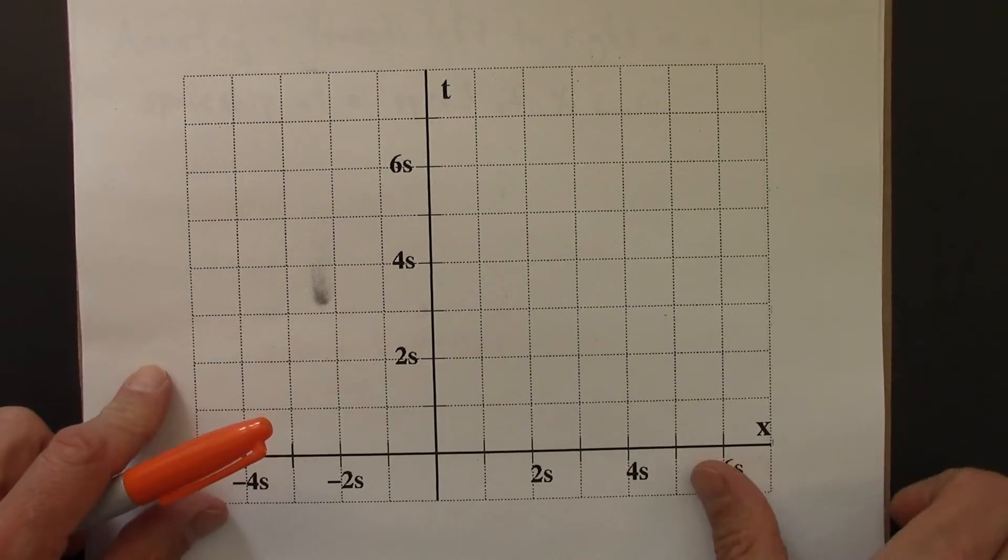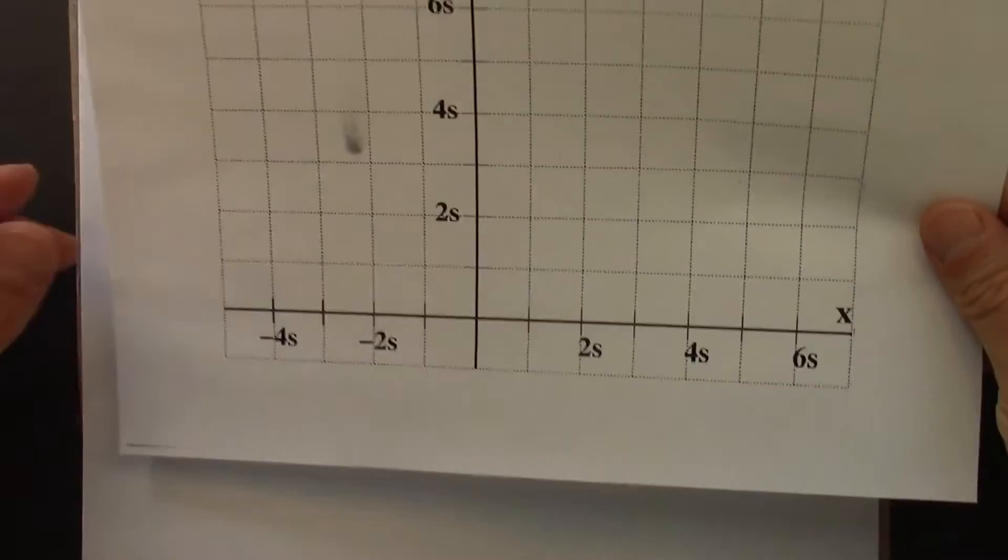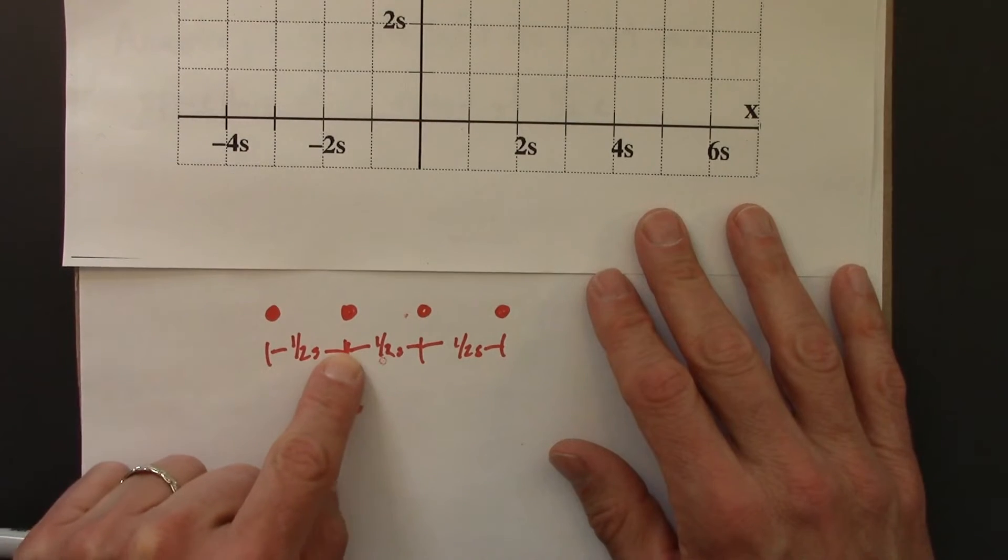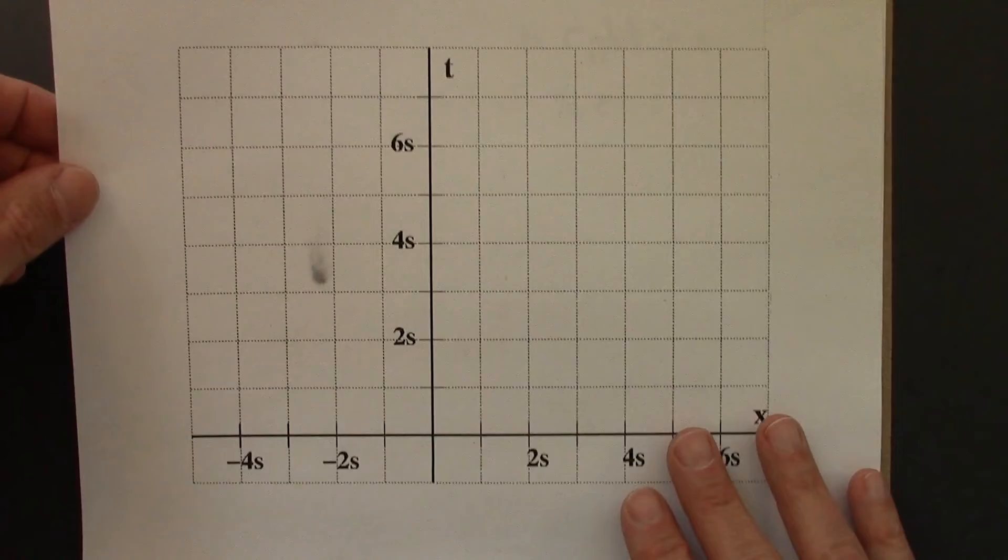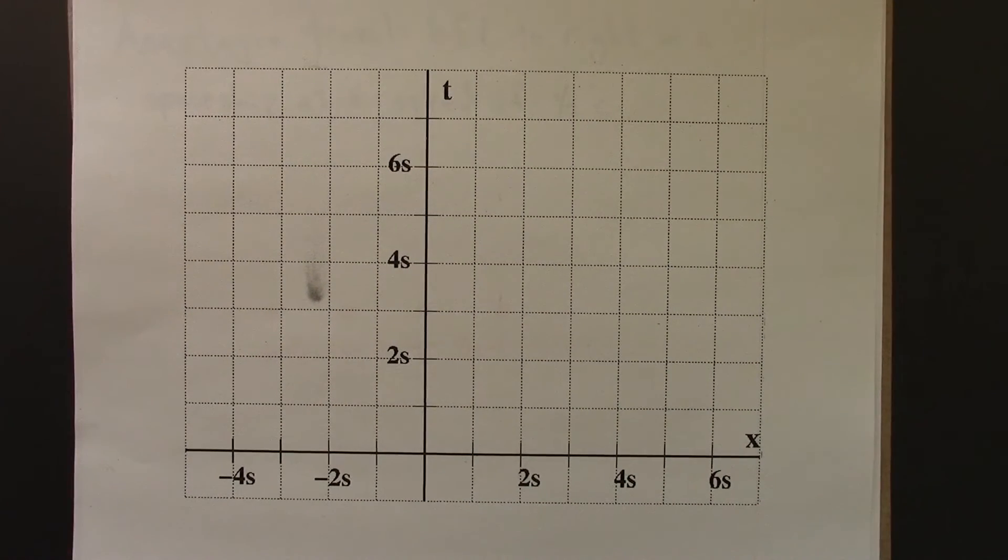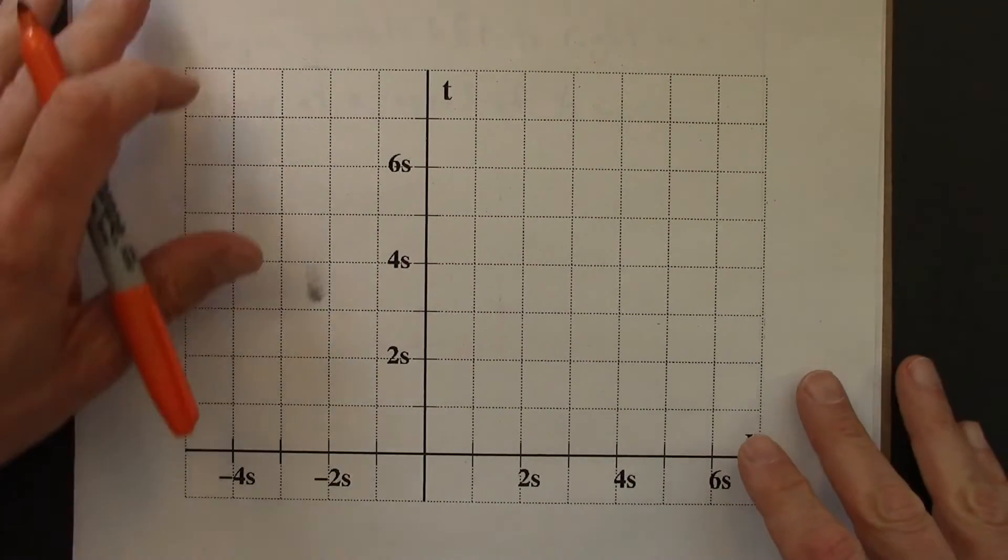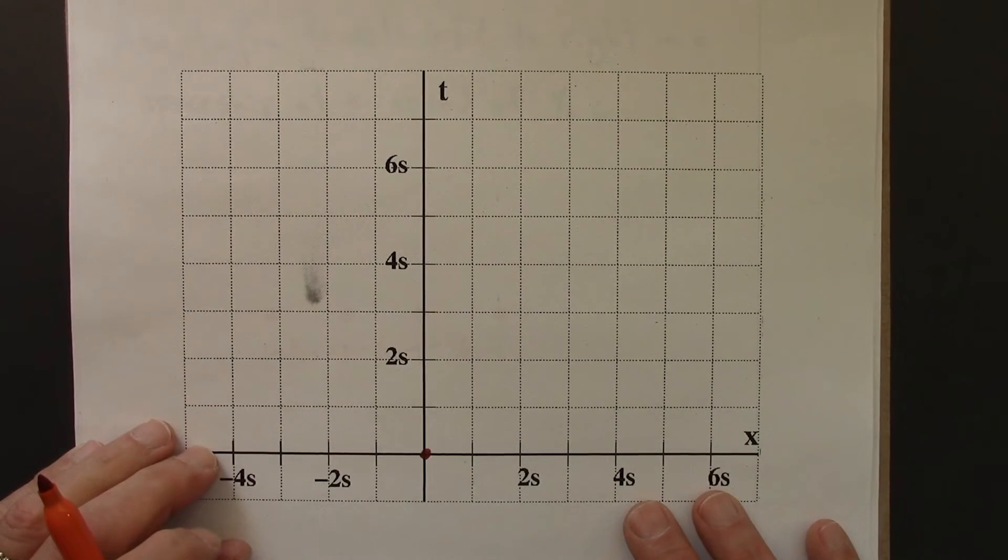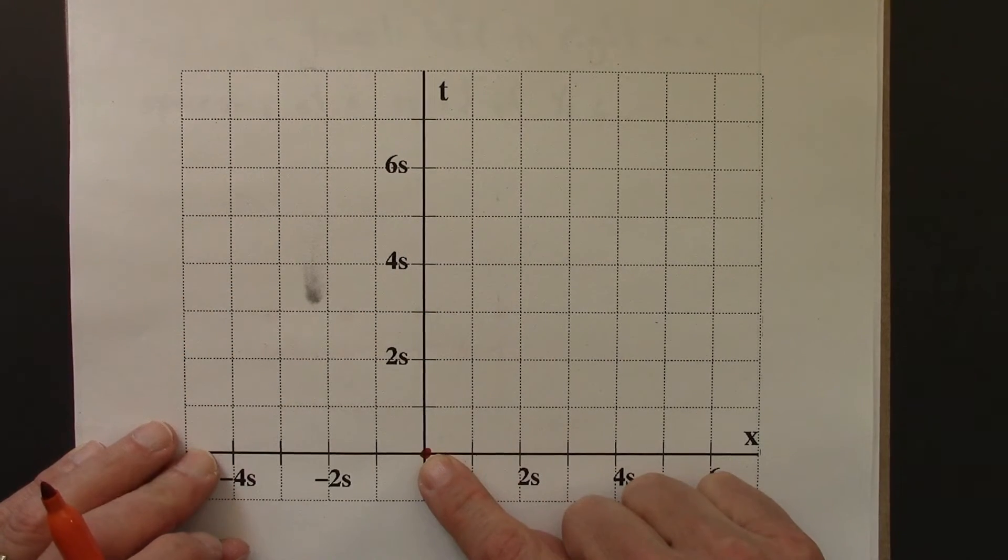Alright, so Anastasia is moving left to right a half second of distance in every second of time. So let's plot that here. Let's say that her initial position coincides with x equals zero. So this is x equals zero, t equals zero.